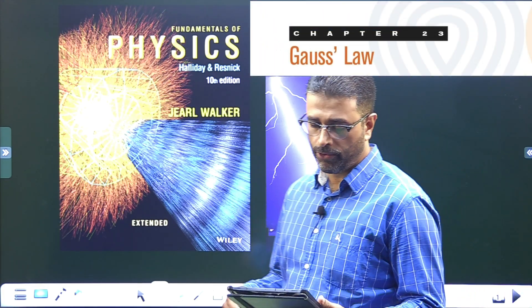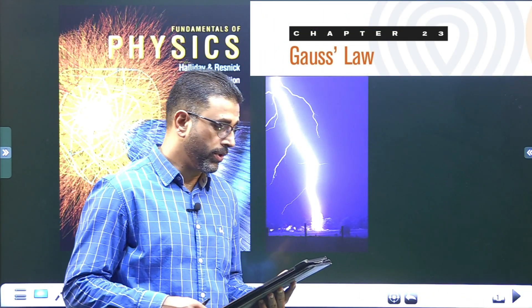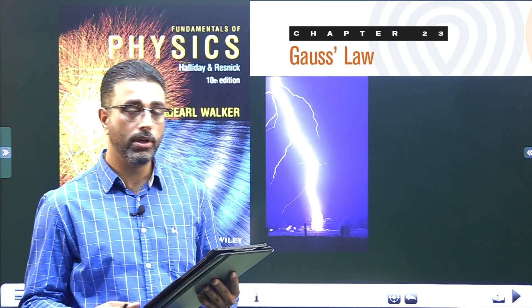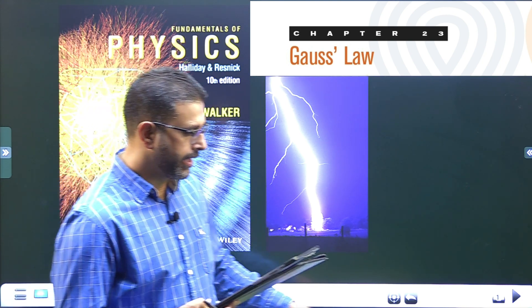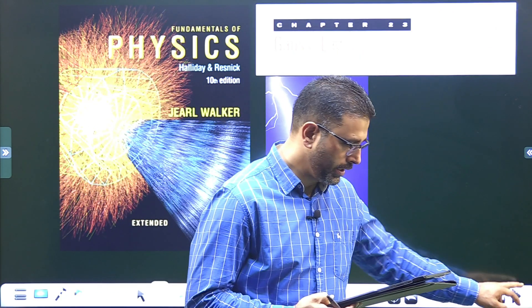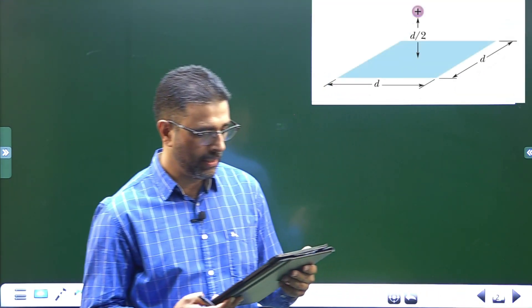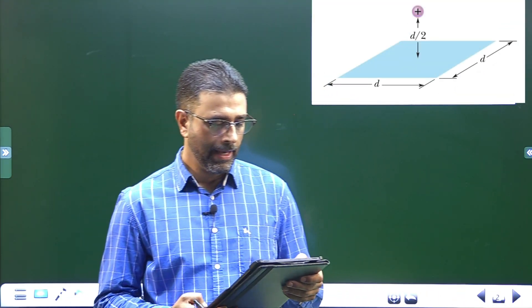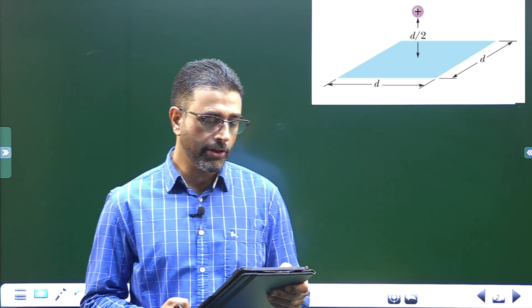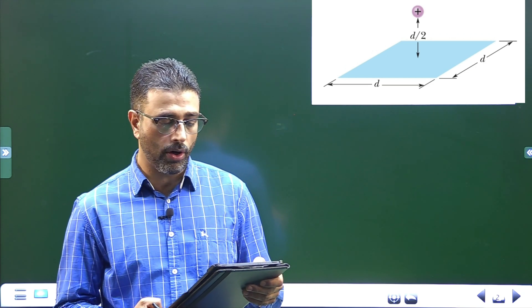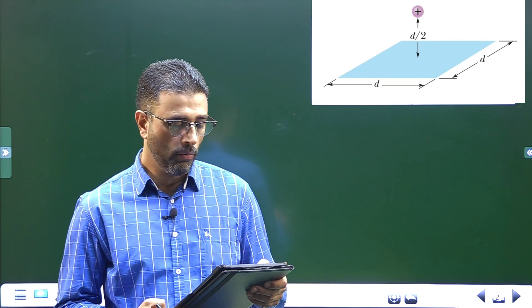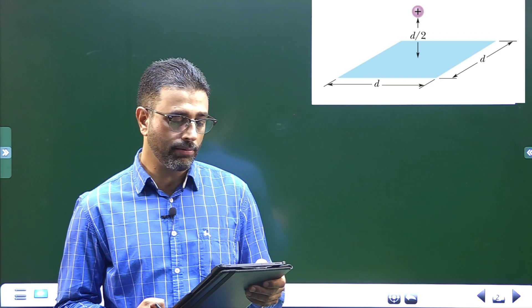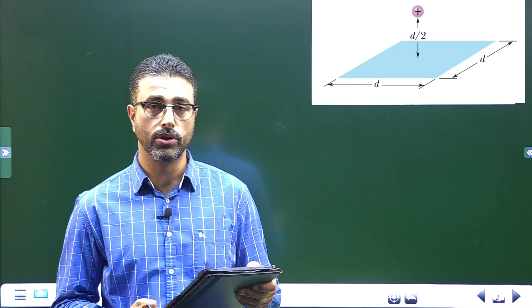Hey guys, Asalaamu alaikum wa rahmatullah. Chapter 23 Gauss law problem number 5. In figure, a proton is a distance d/2 directly above the center of a square of side d. What is the magnitude of the electric flux through the square?